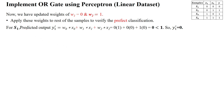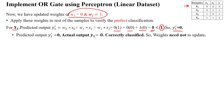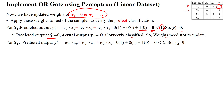These updated weights must be checked against all samples. Going to sample 1 with newly updated values w1=0, w2=1: w0·x0 + w1·x1 + w2·x2 = 0. Comparing with threshold 1, which is less than 1, so y' = 0. The actual output y1 is also 0 — both match, so sample 1 is correctly classified. Weights need not be updated. Then check sample 2.